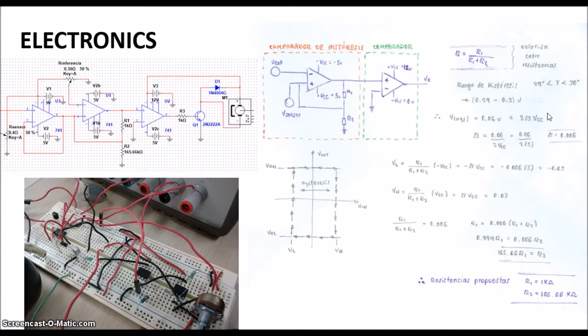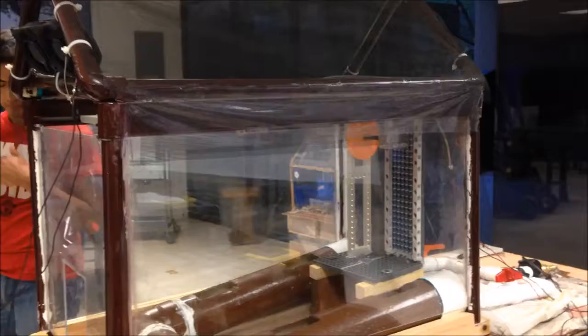And we proposed some resistors to make the circuit work well. Then we put in the output another comparator, this for only making the change, the logic change, for turning on the fan. And in the output of this we put a transistor and a diode in order to give the power to the fan.